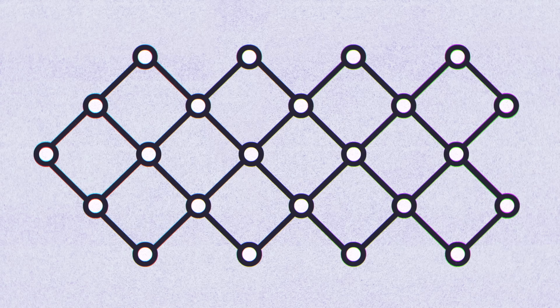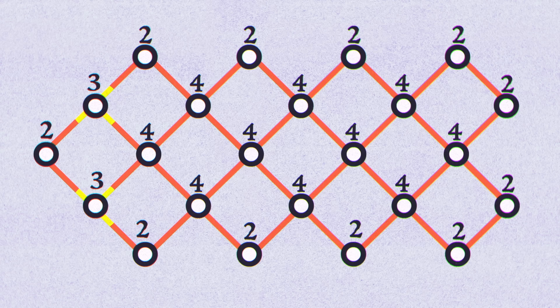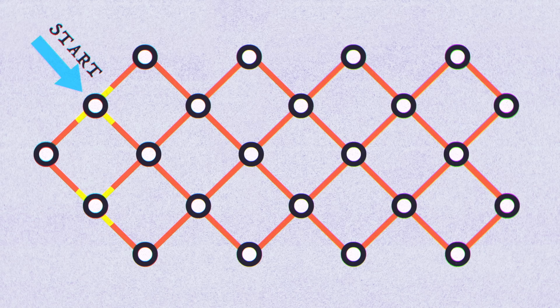If we look at the network formed by the serpent again, and number how many edges emerge from each node, a pattern jumps out that fits what we just saw. Every node has an even number of edges emerging from it, except two. So one of these must be the start of your route, and the other the end.